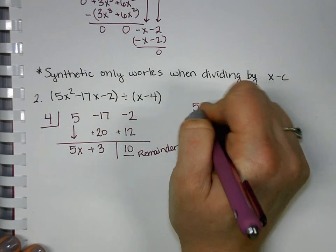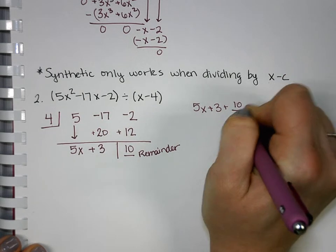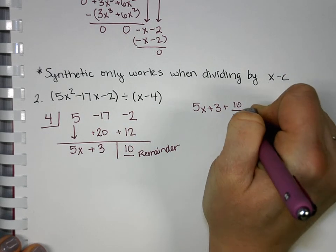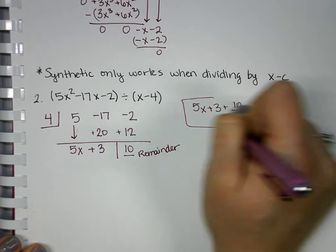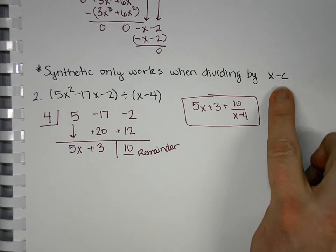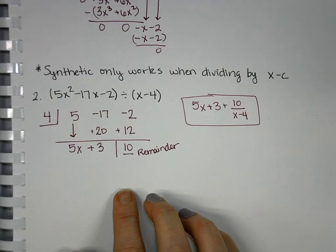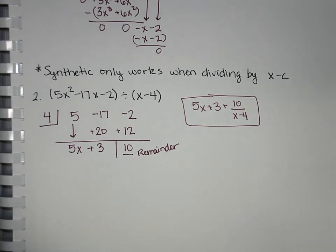So, we'd have 5x plus 3 plus 10 over x minus 4 as our final answer. Okay. So, that's synthetic but again, it only can be used when we have x minus c. So, we're going to do another synthetic in class where it has some zero placeholders that we need to account for.